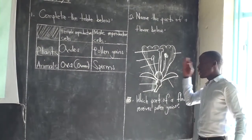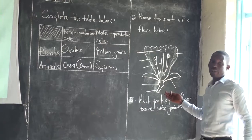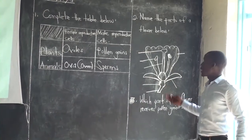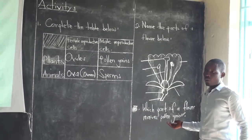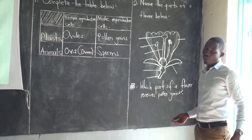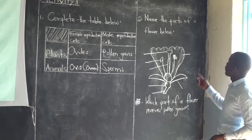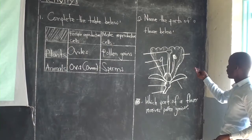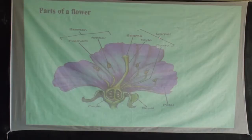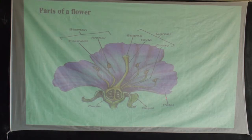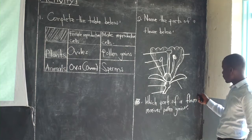In your activity, we did the first number together. So the second number asks you to name the parts of a flower — simply look at the flower specimen here and name all the parts.